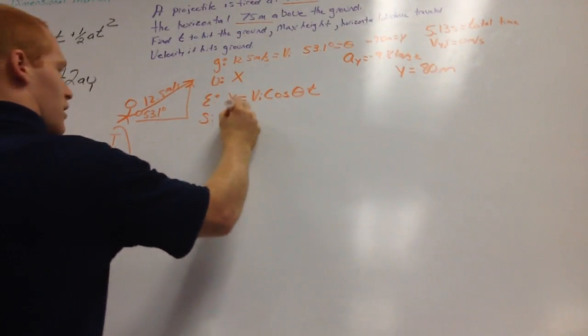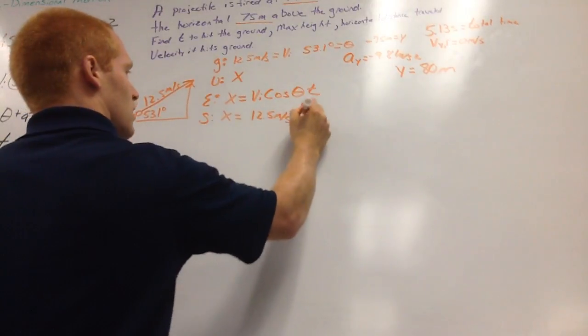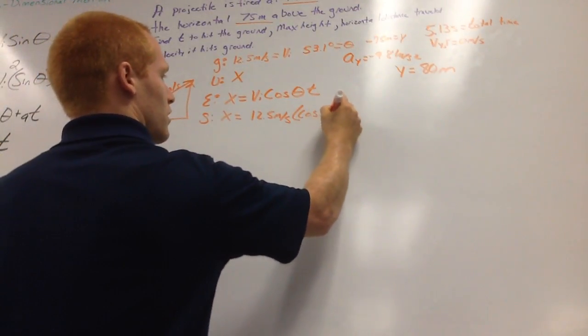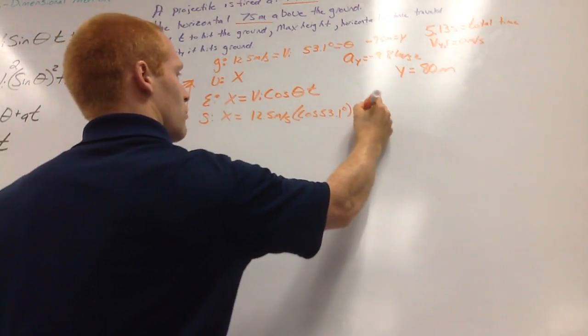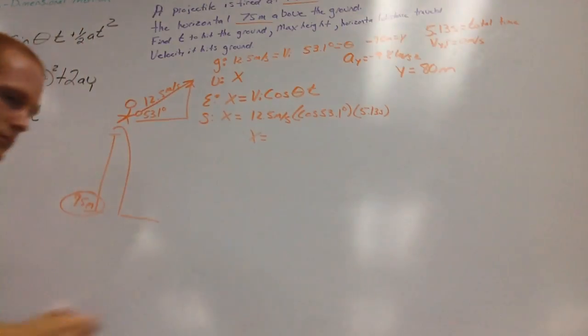So we're just going to plug in from here. X equals 12.5 meters per second times cosine of 53.1 degrees multiplied by our total time, which is 5.13 seconds. And that will give us our x value of 38 meters.